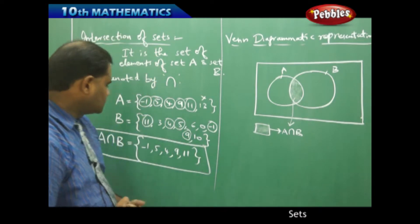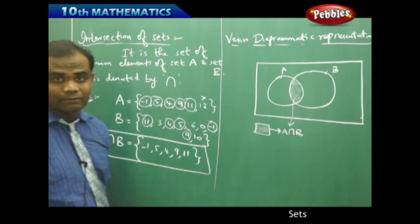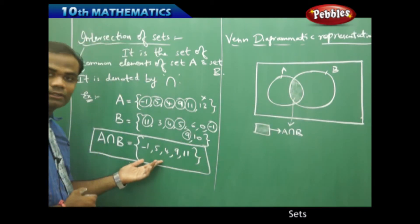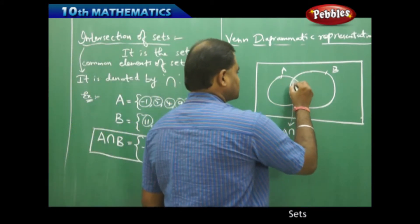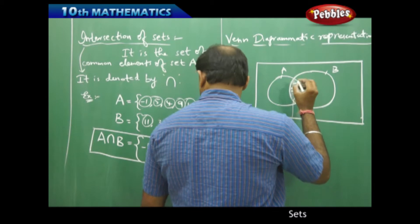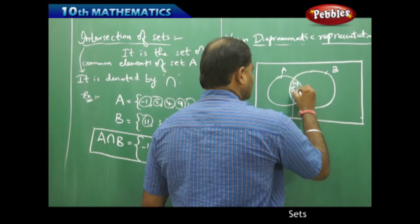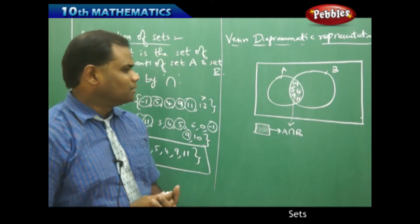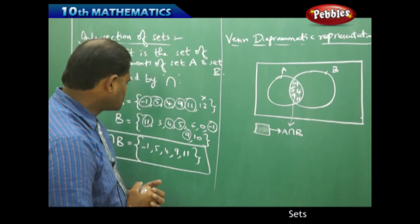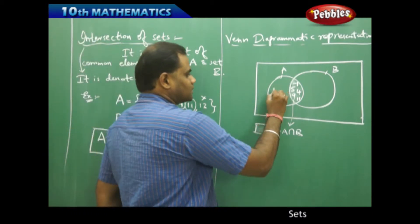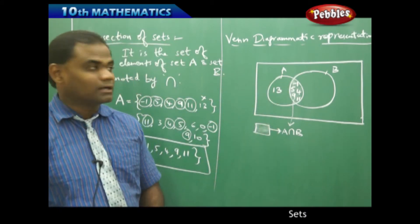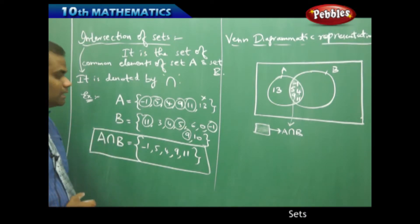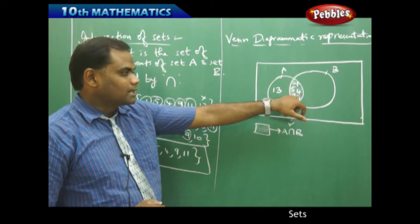The common region of sets A and B contains the elements -1, 5, 4, 9, and 11. We first fill up the common elements as identified algebraically, writing them in the overlapping region. The rest of the elements of A — which is only 13 — comes in the region outside the intersection but inside circle A, because this element is part of set A only.